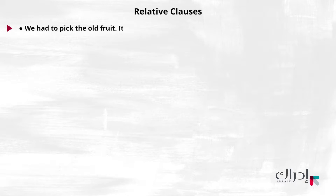Hi everyone. In this lesson, we are going to be talking about relative clauses. Let's have a look at these sentences together. I want you to pay attention to the structure and how it splits into two sentences. Have a look at these sentences: 'We had to pick the old fruit.' 'It is under the fruit trees.'